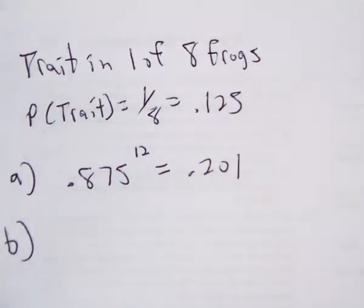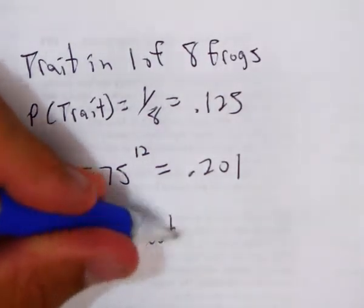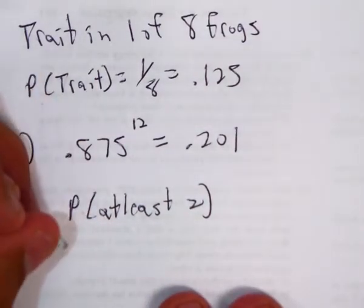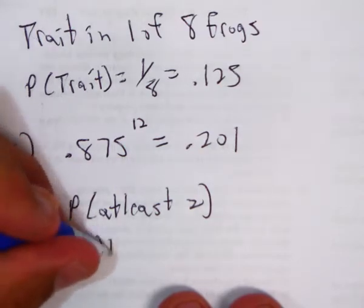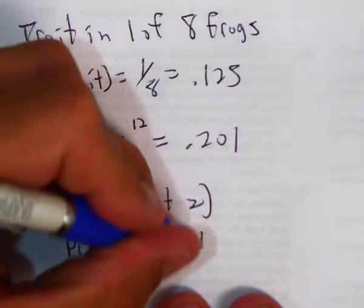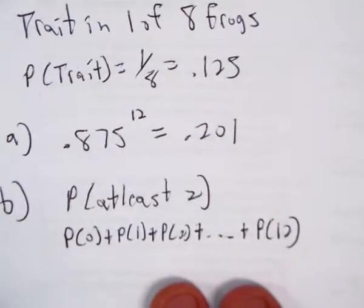And then problem B says at least two frogs. So at least two means that I would add the probability of zero plus probability of one plus probability of two plus dot dot dot probability of twelve. Well, at least two is, and that all adds up to one, right?